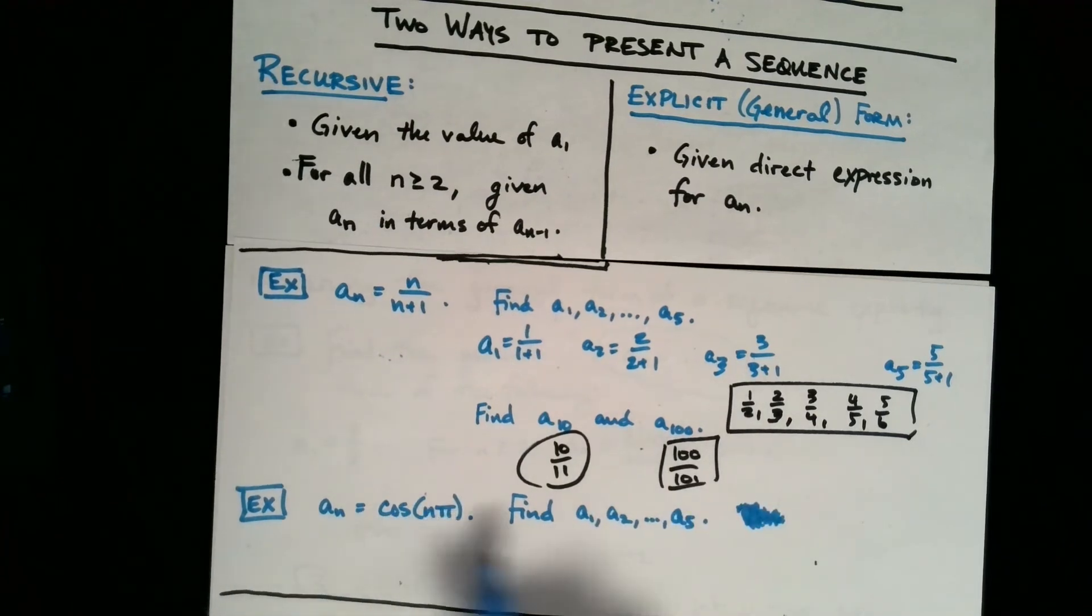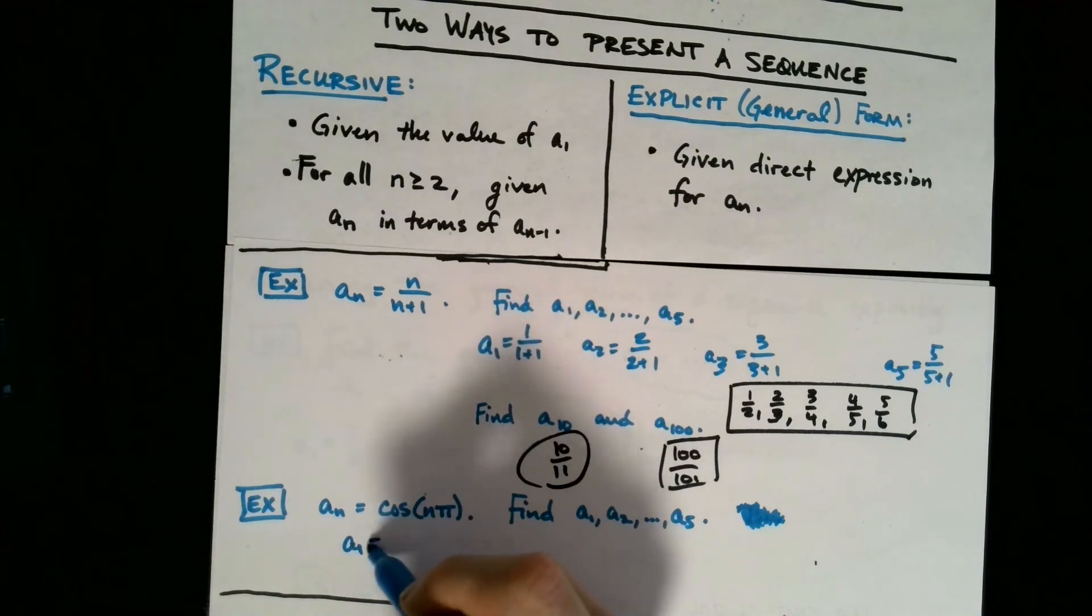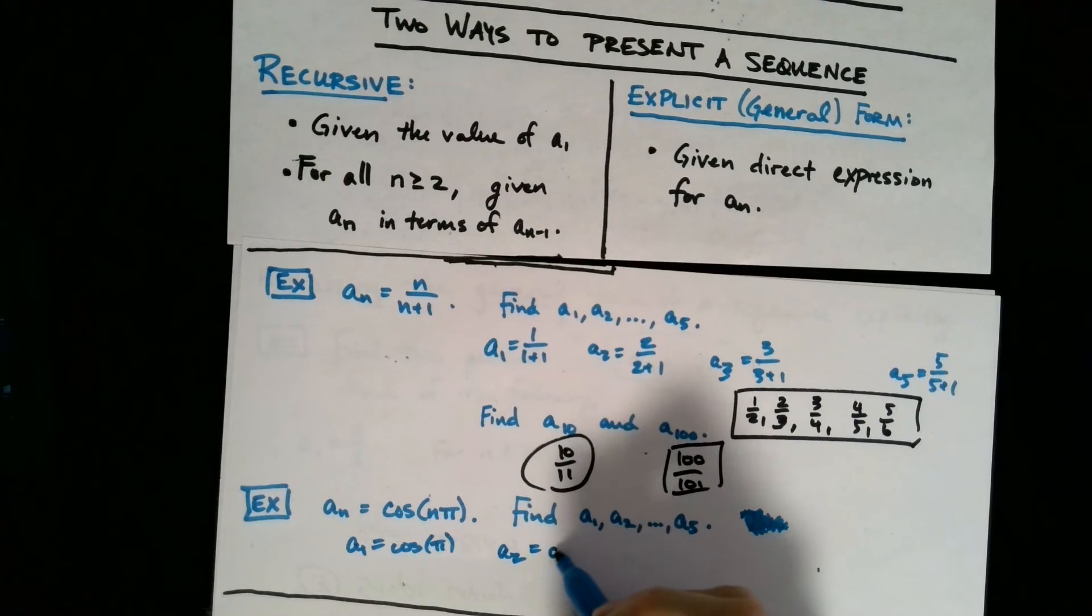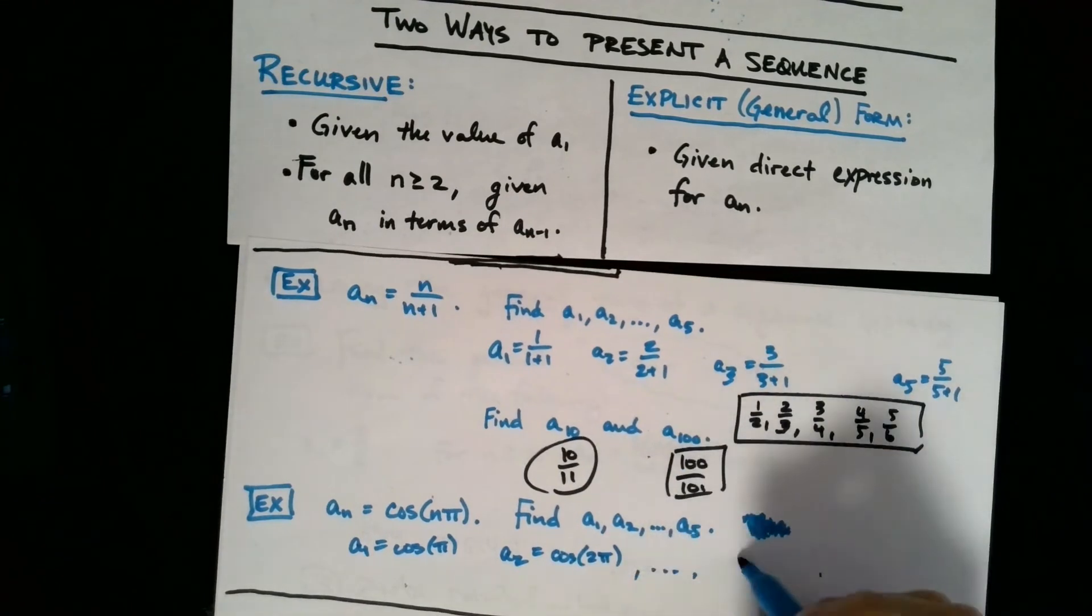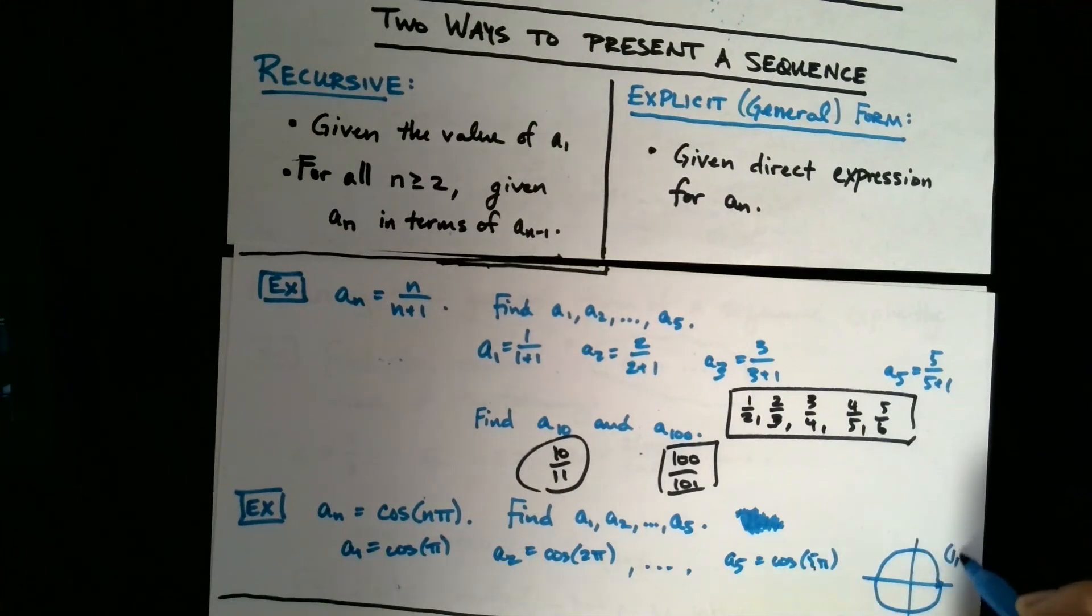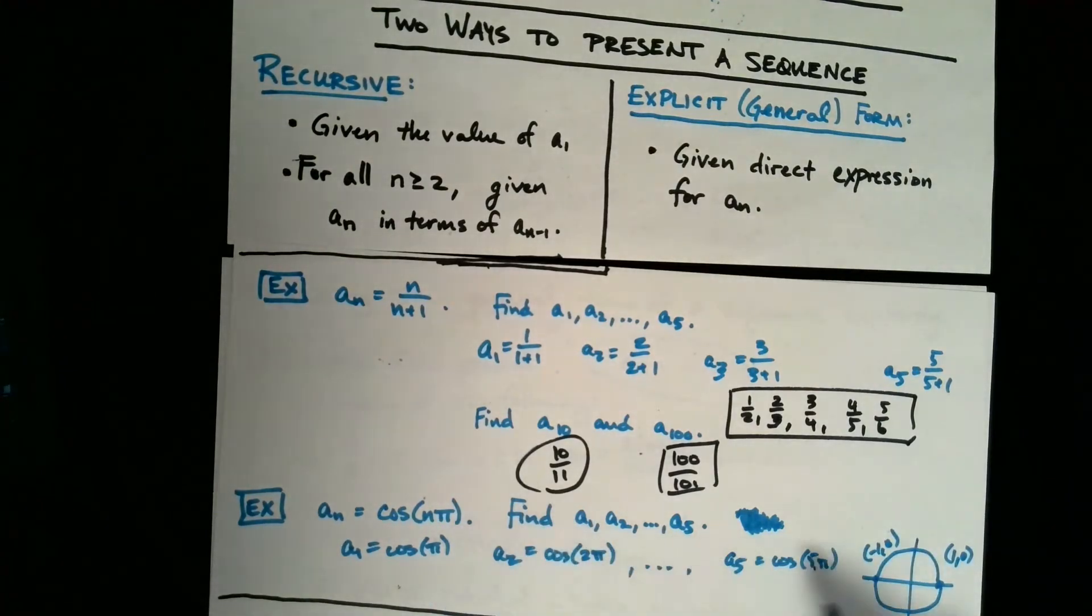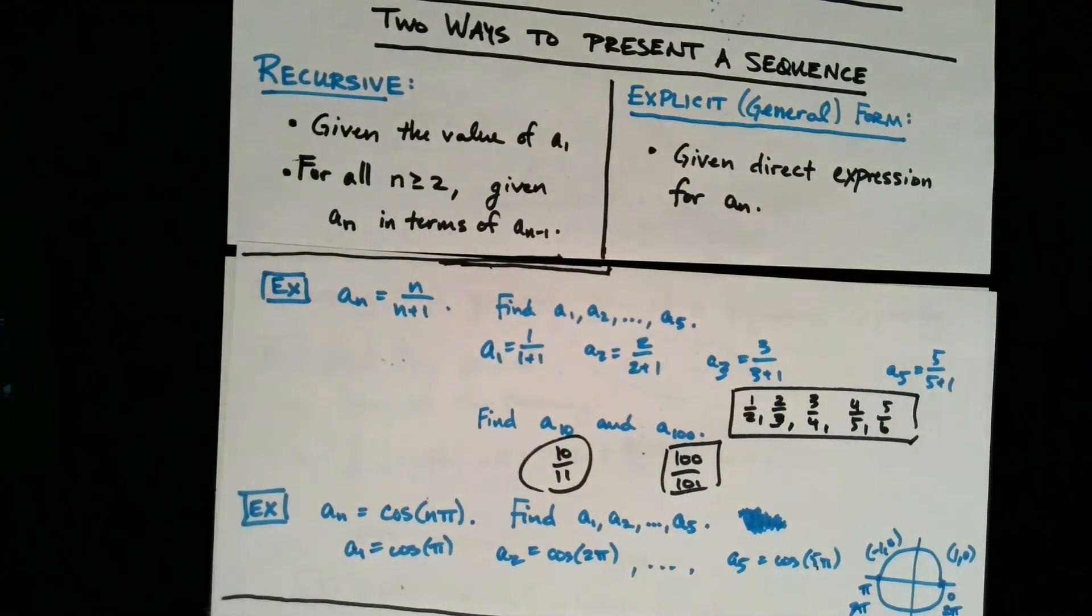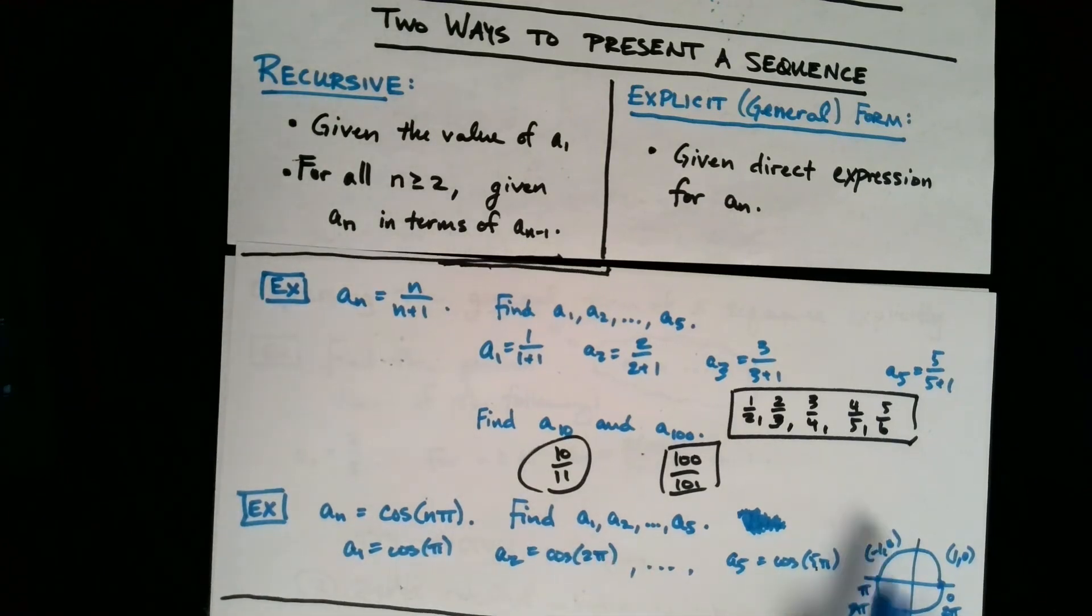So we're getting a feel for the explicit general form. And here's one additional example here to sort of familiarize ourselves with that. aₙ is equal to cosine n times π. We want to find a₁, a₂ out to a₅. Well, how do we find a₁? We just simply plug in n equals 1 because we were given the general form. So this is going to give us cosine π. a₂ is just cosine 2π. And this is going to go all the way out to a₅, which is cosine 5π. Now, to compute these cosine values, it might help to have a unit circle. So let me just draw one in here. Over here, we're at 1, 0. Over here, we're at minus 1, 0. Why are we looking at these points? Well, because you can see the angles here go from π to 2π, 3π, and so on. And we know that on the unit circle, the x coordinate of any point on the unit circle corresponds to the cosine value associated with that particular angle.